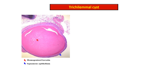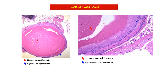On high power view, it is showing that this squamous layer lacks a granular layer in its lining. The inner lumen shows dense homogeneous keratin, and it may be calcified sometimes or show cholesterol clefts.